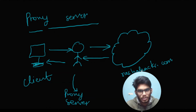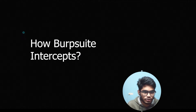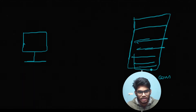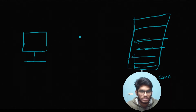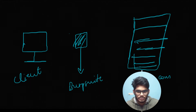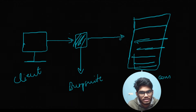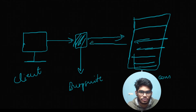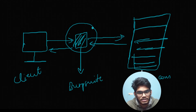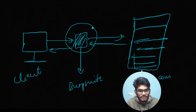So how Burp Suite works: this is your computer visiting some site on a server, and you want to intercept all the requests and responses you are making to google.com. What we do is use a software called Burp Suite. Burp Suite acts like a proxy server. Here is your client making requests to the server, and Burp Suite sits in between and can see those requests and also the responses. This is the concept of using Burp Suite — it acts as a proxy server to intercept any kind of request and response.